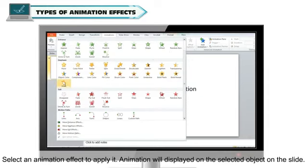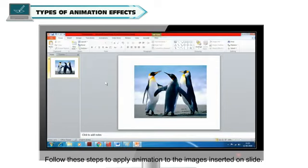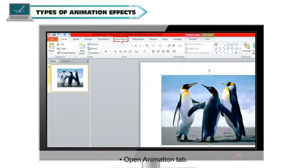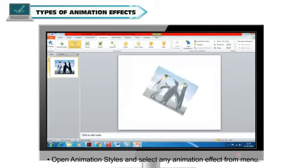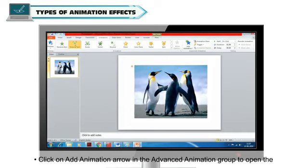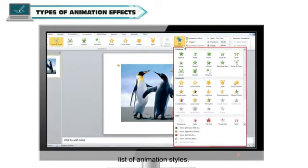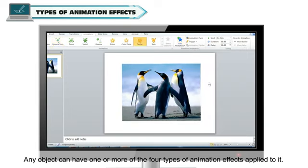Select an animation effect to apply it. The animation will be displayed on the selected object on the slide. Follow these steps to apply animation to the images inserted on the slide: first of all, select any image, open the Animation tab, open Animation Styles and select any animation effect from the menu. Click on Add Animation arrow in the Advanced Animation group to open the list of animation styles.